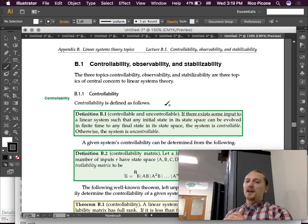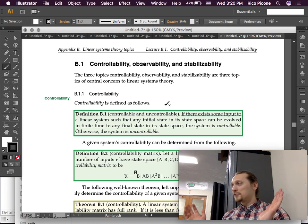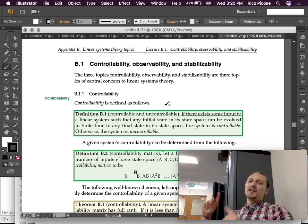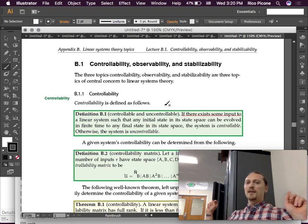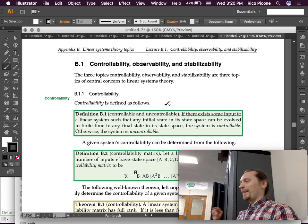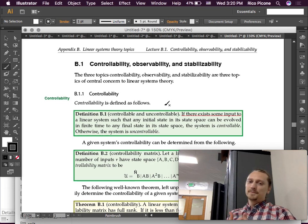If there exists some input to a linear system such that any initial state in its state space can be evolved in finite time to any final state in its state space, the system is controllable. Otherwise, the system is uncontrollable. So, if you could start at any state and evolve it in finite time, it could take a long time. But, as long as you can get it from point A to point B in space, you can't pick two that you can't do that for. So, you can always get from one to another in finite time, then you're controllable. If you can't do that, then it's uncontrollable.